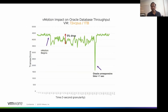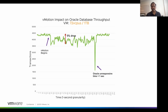Here I'm showing you how Oracle throughput looks during a vMotion. I'm showing markers where vMotion begins and ends. The x-axis is at one-second granularity, so we're looking at Oracle throughput every second during the entire migration. The impact is pretty minimal — the only dip is during the switchover time where we stop VM execution on the source host and switch it to the destination. Even there, Oracle response time was less than half a second. For most typical size VMs, even large ones — here we have a 72 vCPU, one-terabyte VM — the guest impact is pretty minimal.